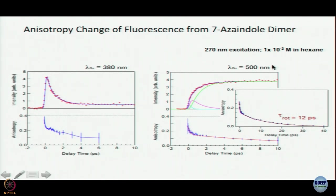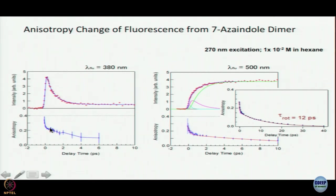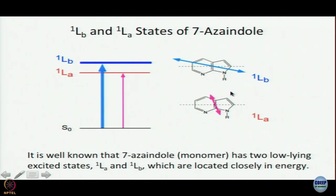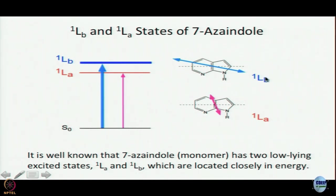When you look at the 500 nanometer tautomer band, the fluorescence depolarization is mainly due to rotation. However, when you look at the locally excited state, there is a very, very fast — ultrafast — component. That 0.2 picosecond component cannot be due to rotation. The reason comes from classical knowledge of this kind of molecule: 7-azaindole has two very closely lying excited states, singlet LA and singlet LB, well established by experiments and calculations.